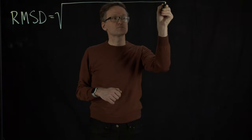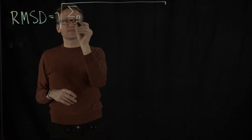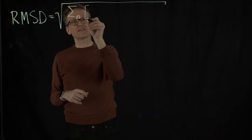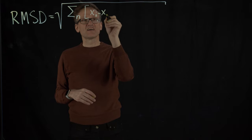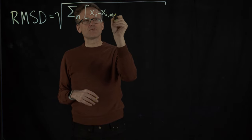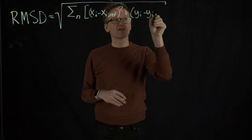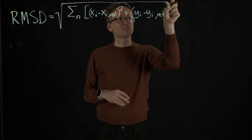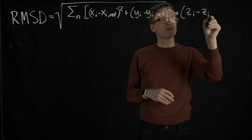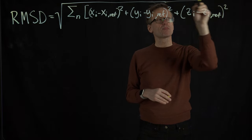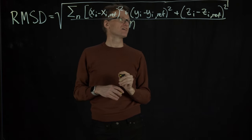I'm going to need a large bracket here. So I take the sum of all atoms n in a particular protein and then I need to calculate x_i minus x_i_ref squared plus y_i minus y_i_ref squared needs to be longer plus z_i minus z_i_ref squared, and then divide that by the number of residues. I think I got that right.